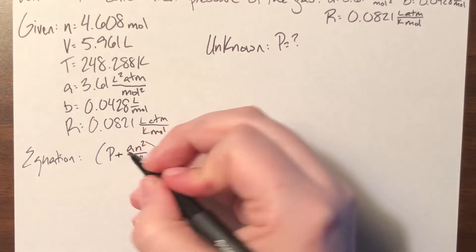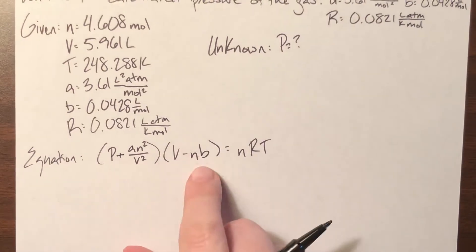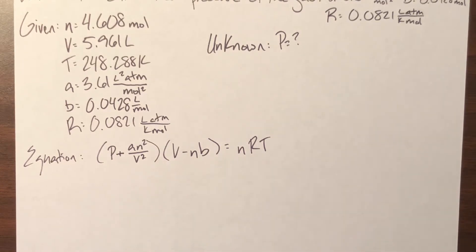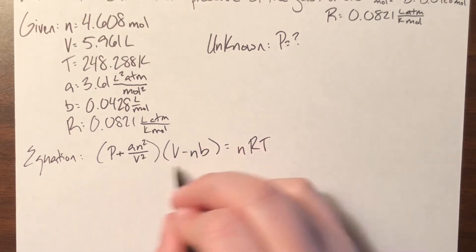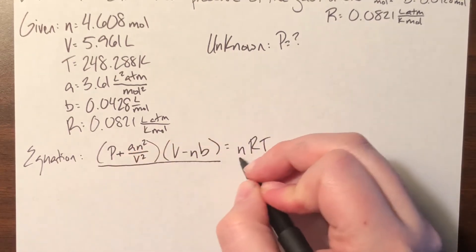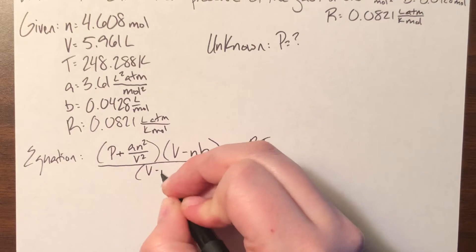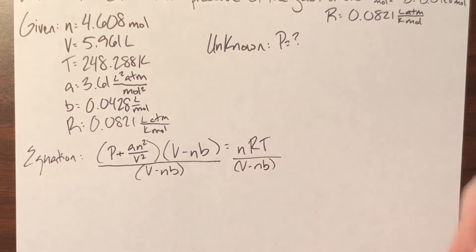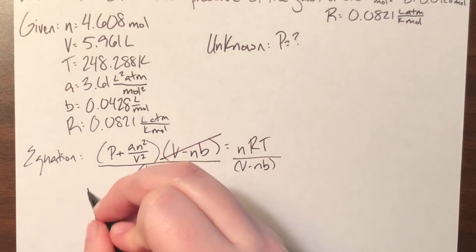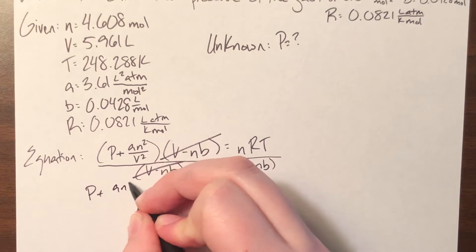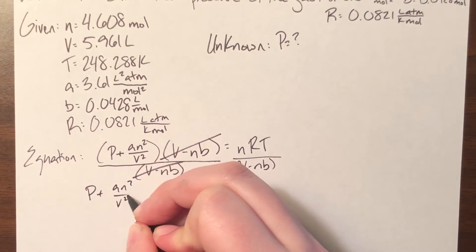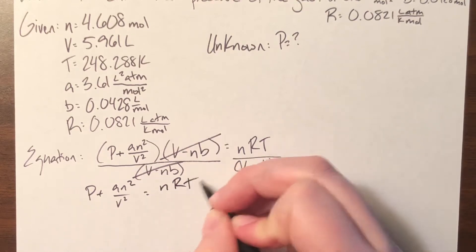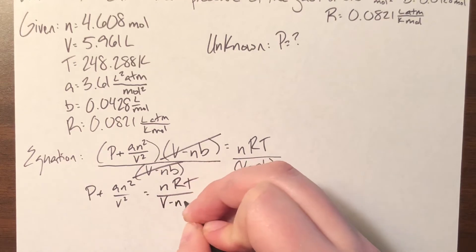I'm solving for pressure, so I need to get rid of this second parenthesis set first. As with PEMDAS, I'm going to deal with parentheses first. I need to undo this multiplication, which means I'm going to divide both sides by V minus NB. That will cancel it on the left, leaving me with P plus AN squared over V squared, equal to nRT divided by V minus NB.